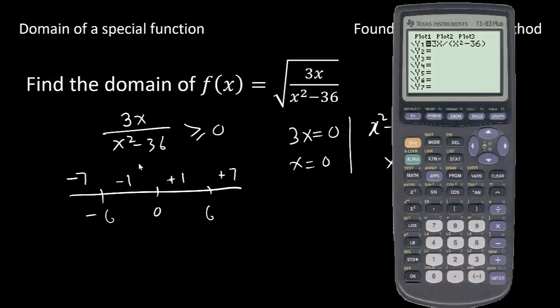We check the sign of 3x over x squared minus 36 at the test points. So we have typed here 3x over x squared minus 36. Now trace it at negative 7. So that gives me negative answer.